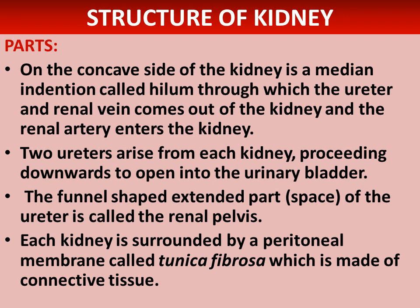On the concave side of the kidney is a median indentation called the hilum, through which the ureter and renal vein come out of the kidney and the renal artery enters the kidney. Two ureters arise from each kidney, proceeding downwards to open into the urinary bladder. The funnel-shaped expanded part of the ureter is called the renal pelvis. Each kidney is surrounded by a peritoneal membrane called tunica fibrosa, which is made of connective tissue.